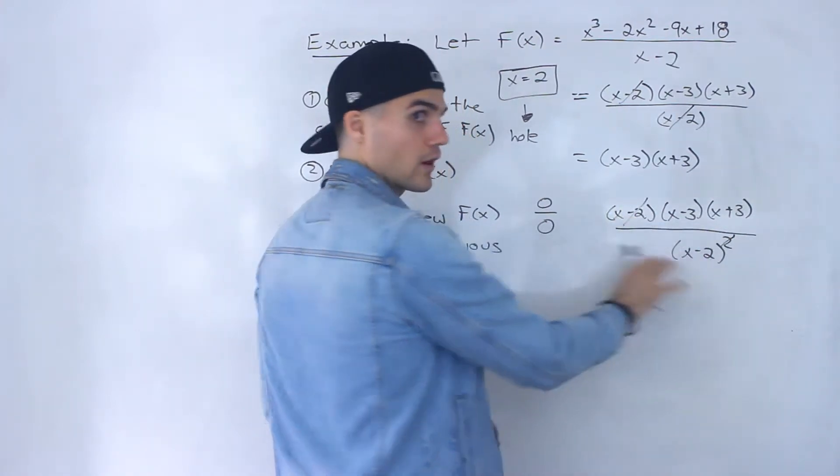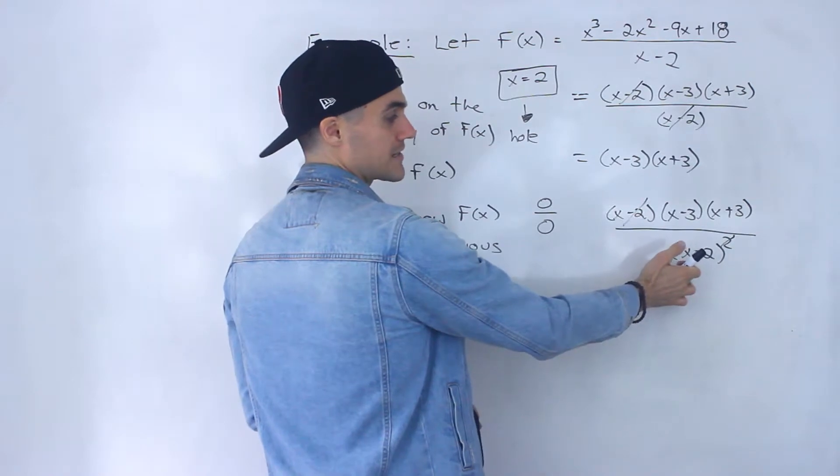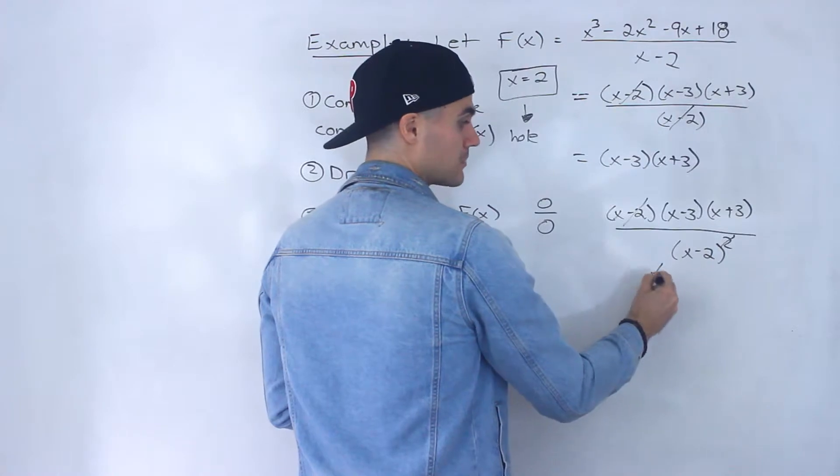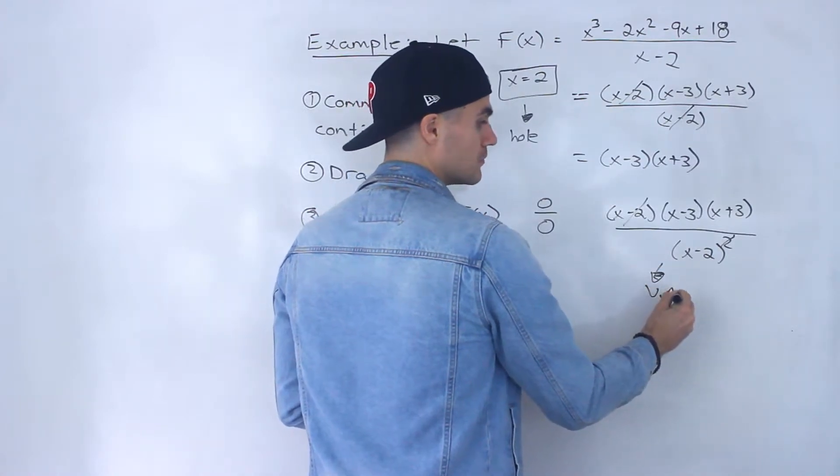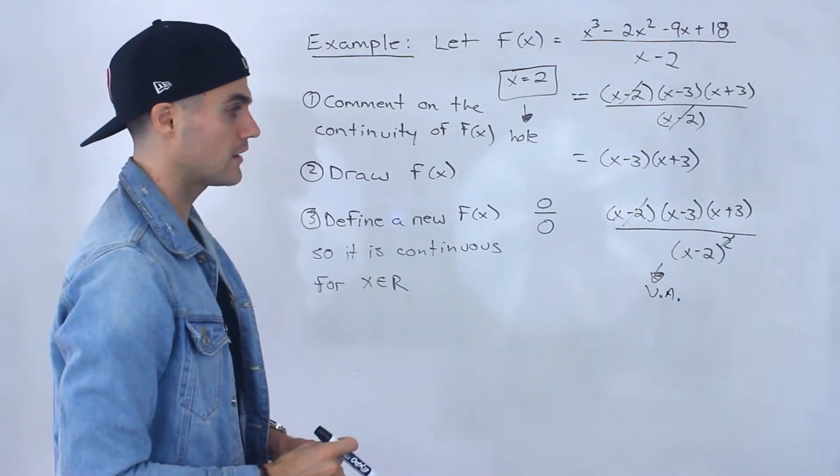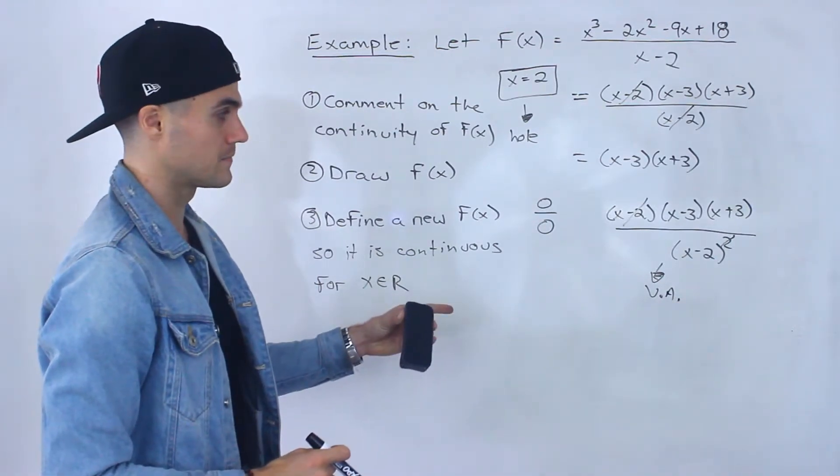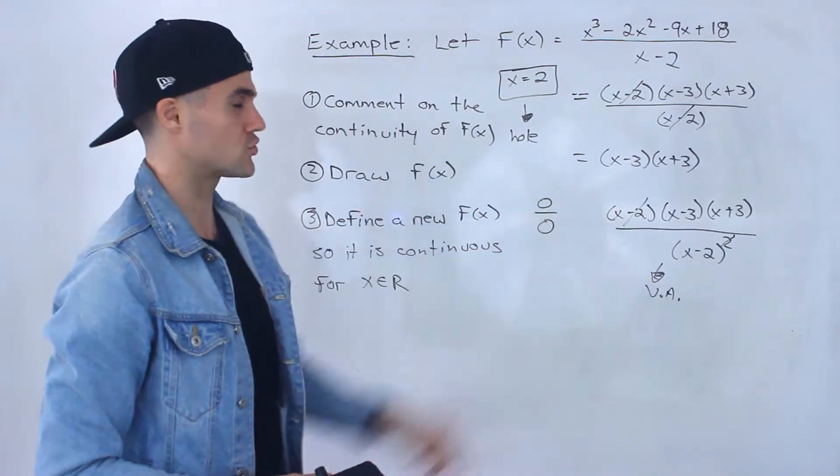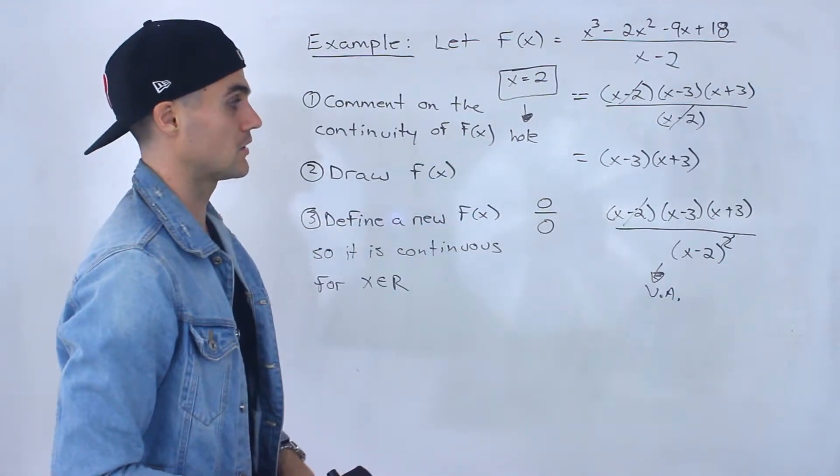there's two of them here, so only one of them would cancel out, we would still be left with an x minus 2 in the denominator. So in this particular case, this would actually end up being a vertical asymptote, because there's still that factor left in the denominator after canceling. So 0 over 0, not always it's going to be a hole, but for the majority of the cases, it is going to be a hole.